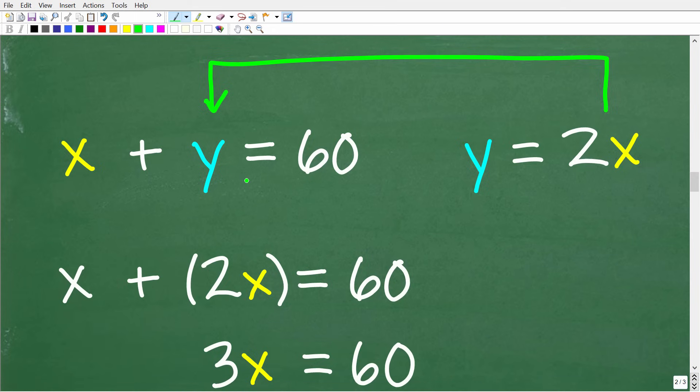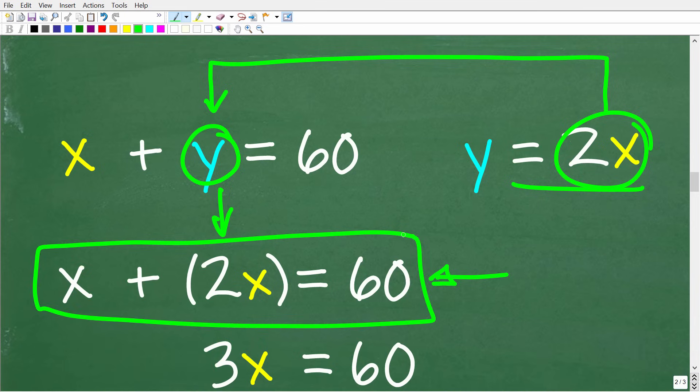We have X plus Y is equal to 60. We're going to substitute 2X for Y. So anytime you are substituting in mathematics, especially algebra, you want to use parentheses. So Y is going to be the same thing as 2X. So now we have X plus 2X is equal to 60. And this is what we want. We have one equation with the variable X and X only. So now we can solve for X.